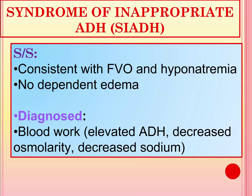For SIADH diagnosis, an ADH level will be drawn. Blood osmolarity or serum osmolarity will be decreased, and sodium will also be decreased. Urine osmolarity will be increased because the urine is concentrated, and specific gravity will also be elevated.